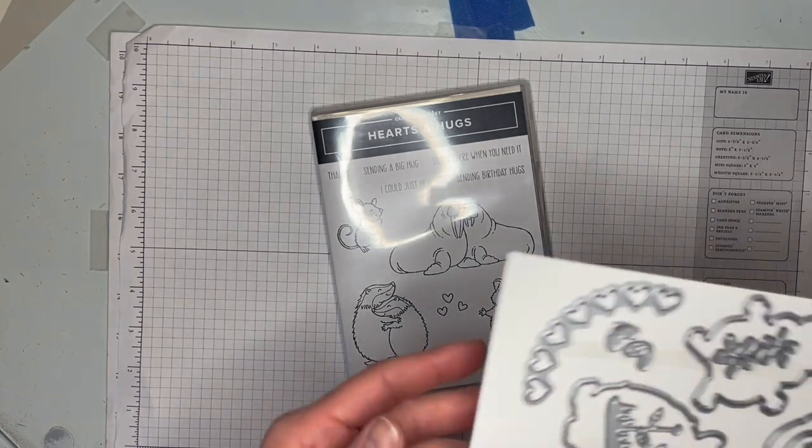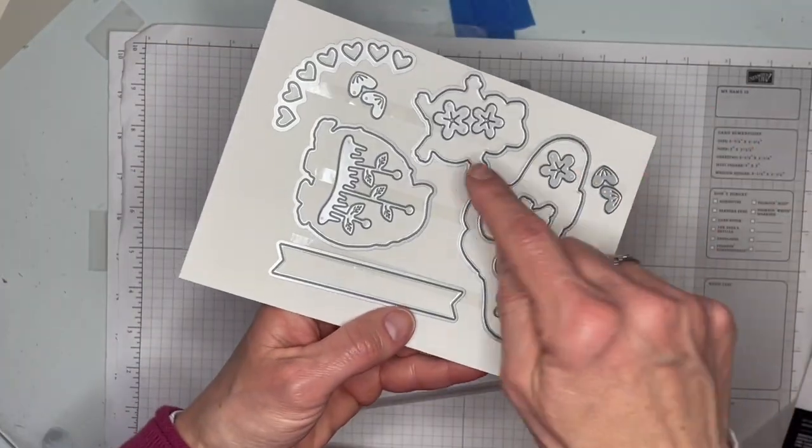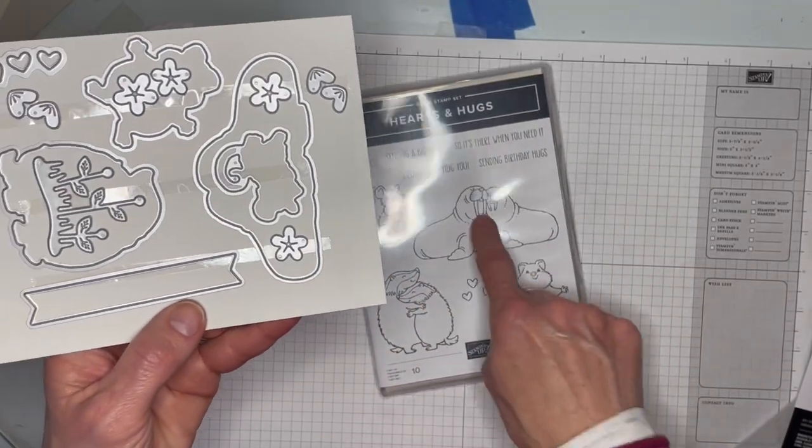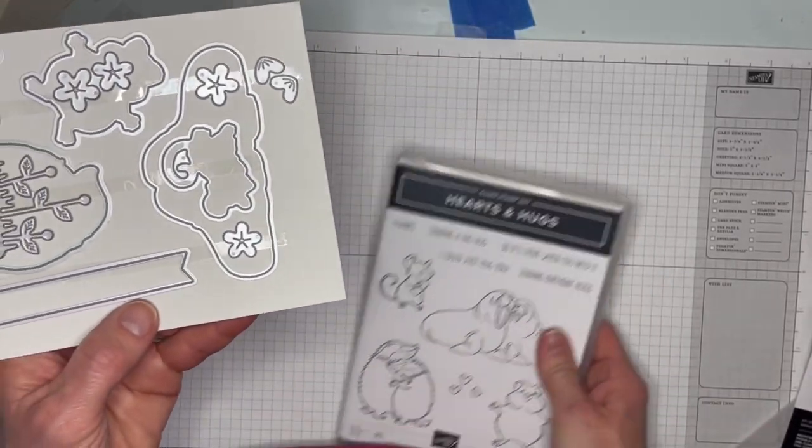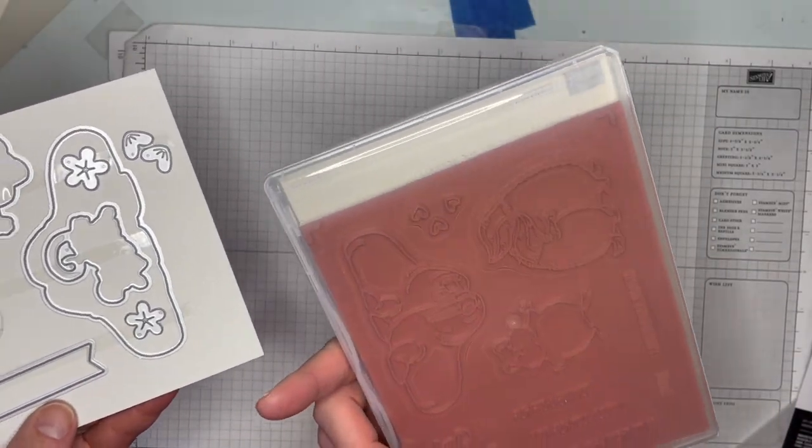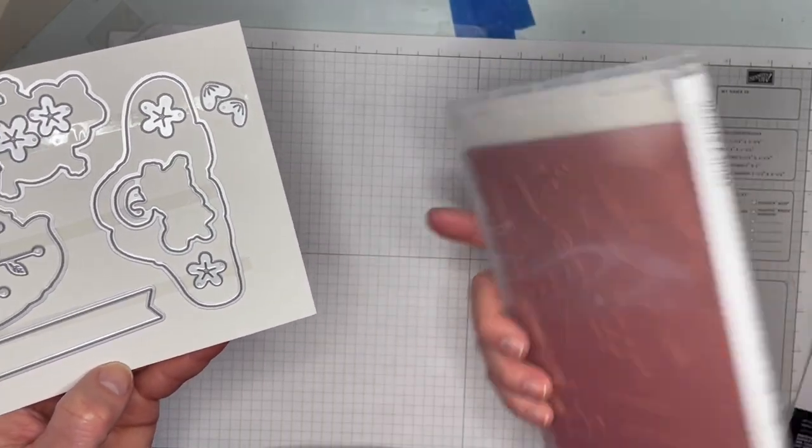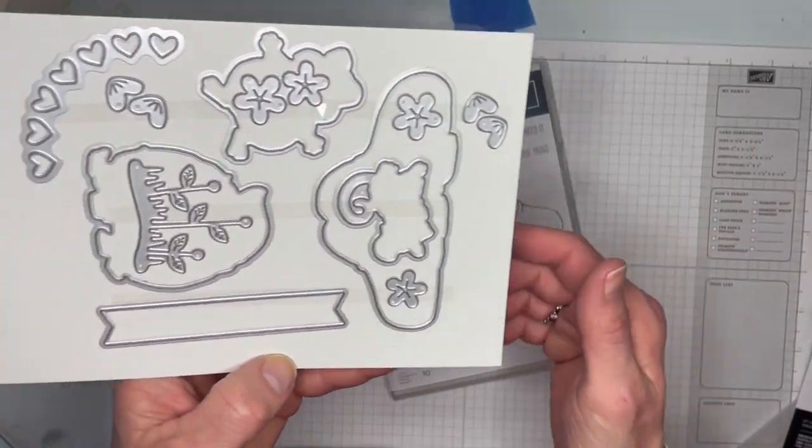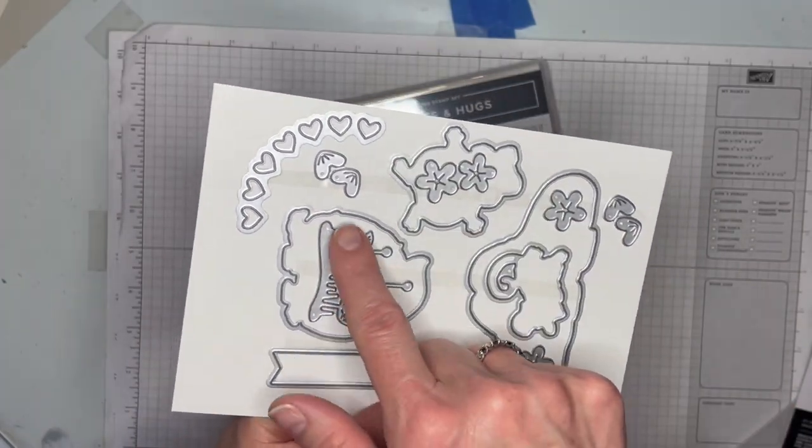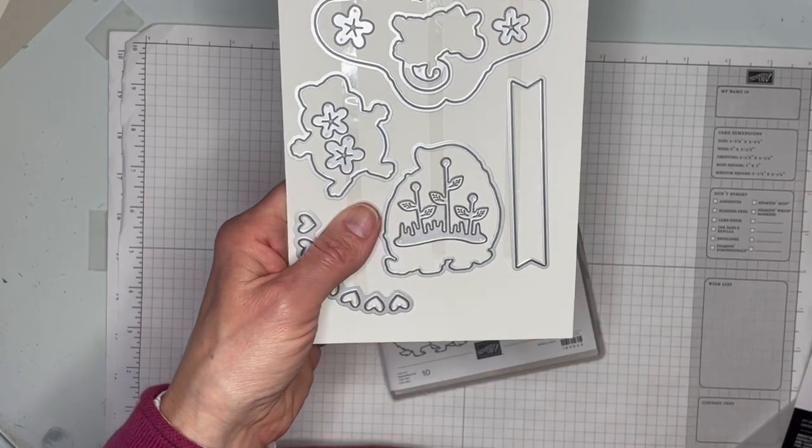All right. Here we go. The hearts and hugs dies. So this one comes with some extras too. So we've got, that one, that one, and that one are the outlines to the four animal stamps. And this one is red rubber too. So you can plan ahead. I know some people love red rubber. Some people love photopolymer. Some people use both like I do. And we've got some extra flowers, some hearts, some little flower stems that you can add the flower tops to a banner.